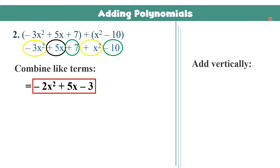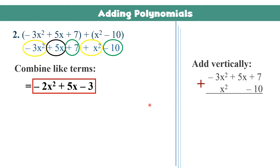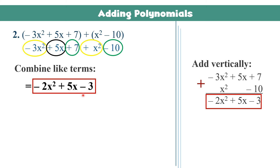You may also add vertically. Copy the first polynomial, then align each term of the second polynomial with its like term. So x squared must be aligned under negative 3x squared, and negative 10 is written under positive 7. Combining negative 3x squared plus x squared gives negative 2x squared. Bring down 5x. Then positive 7 plus negative 10 gives negative 3. The answer is the same.